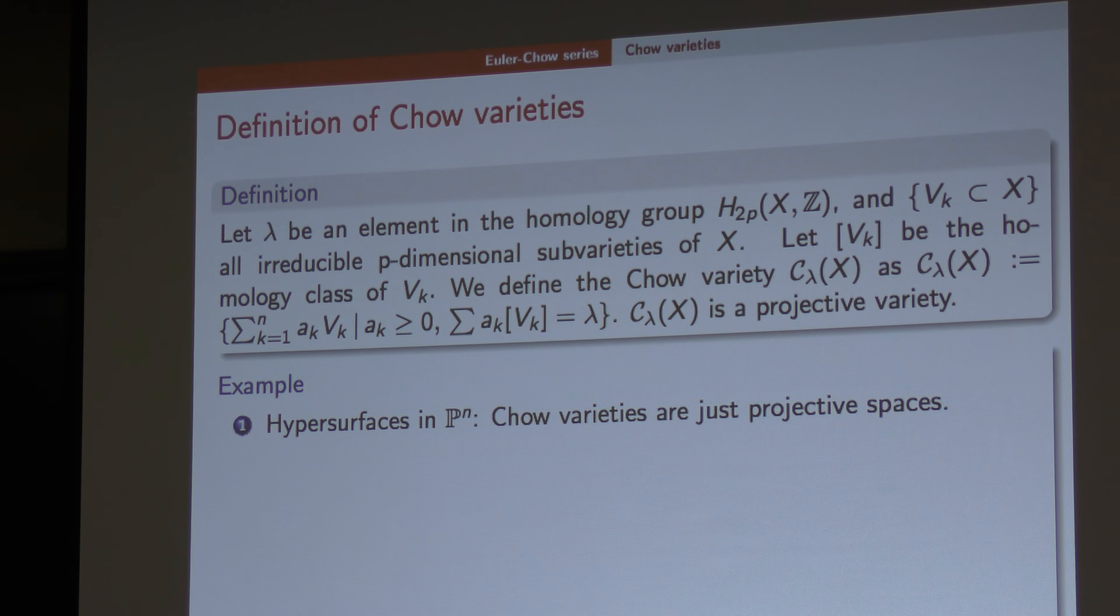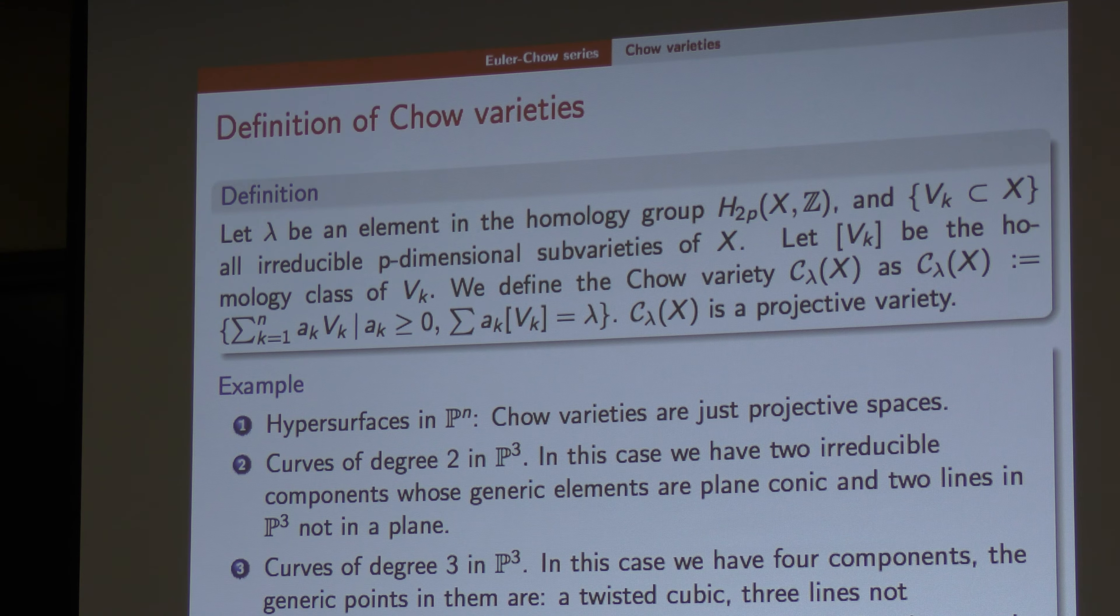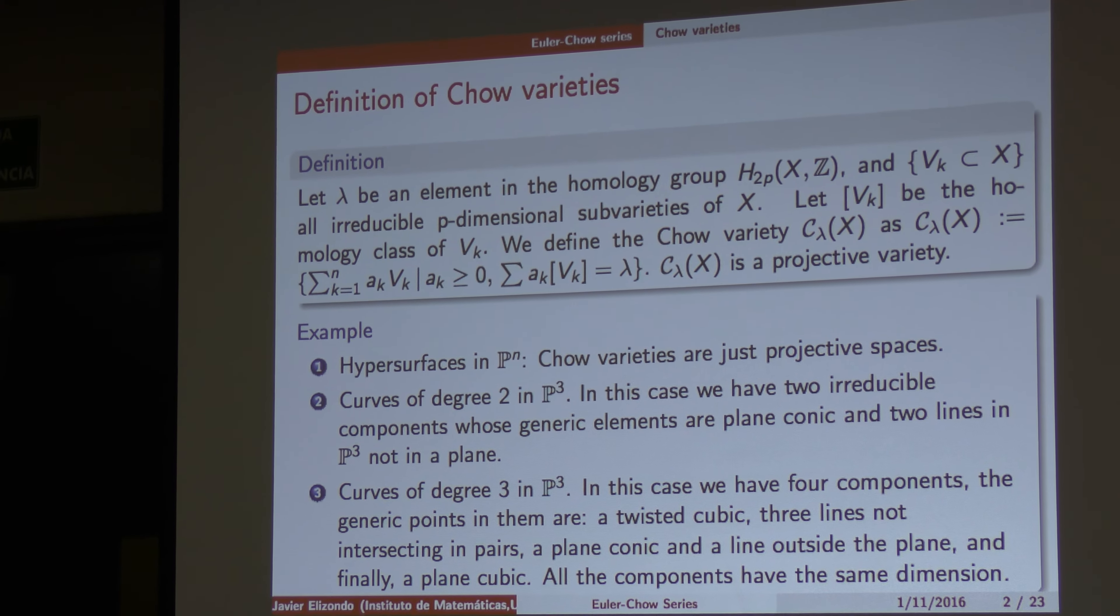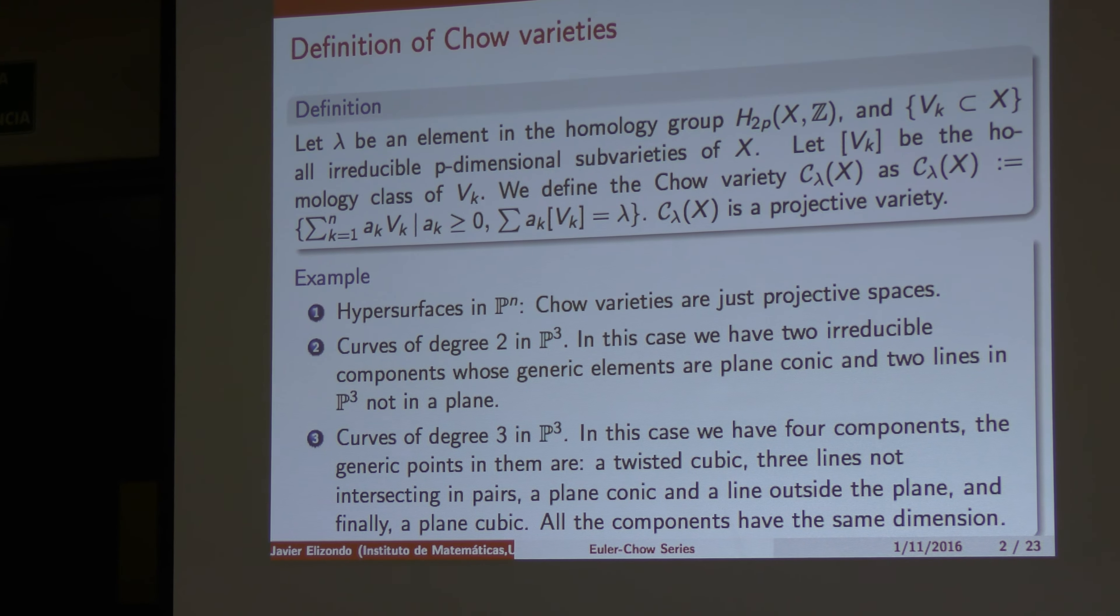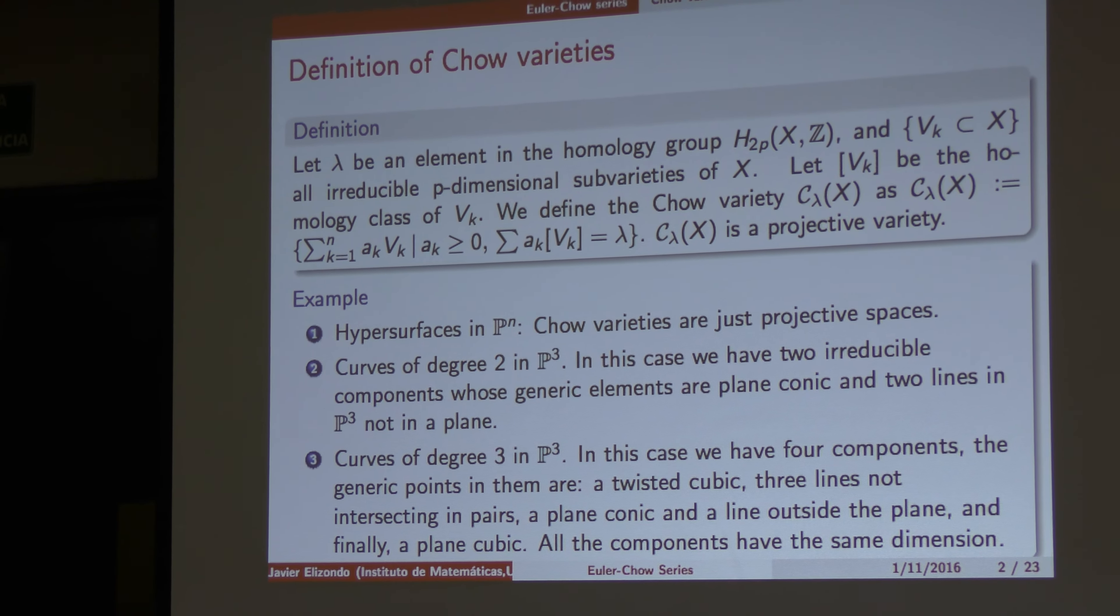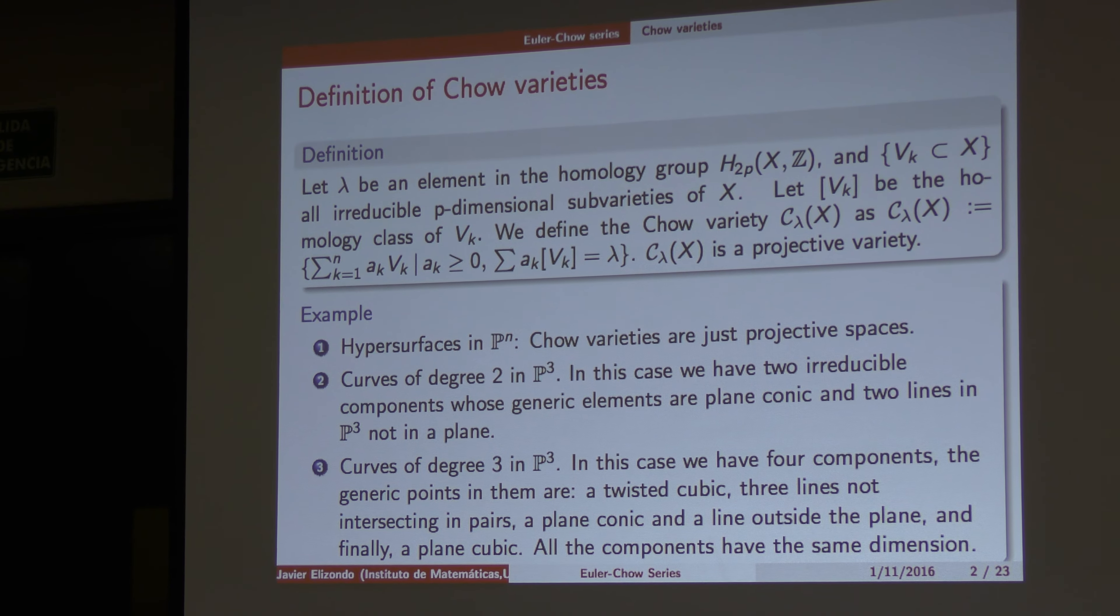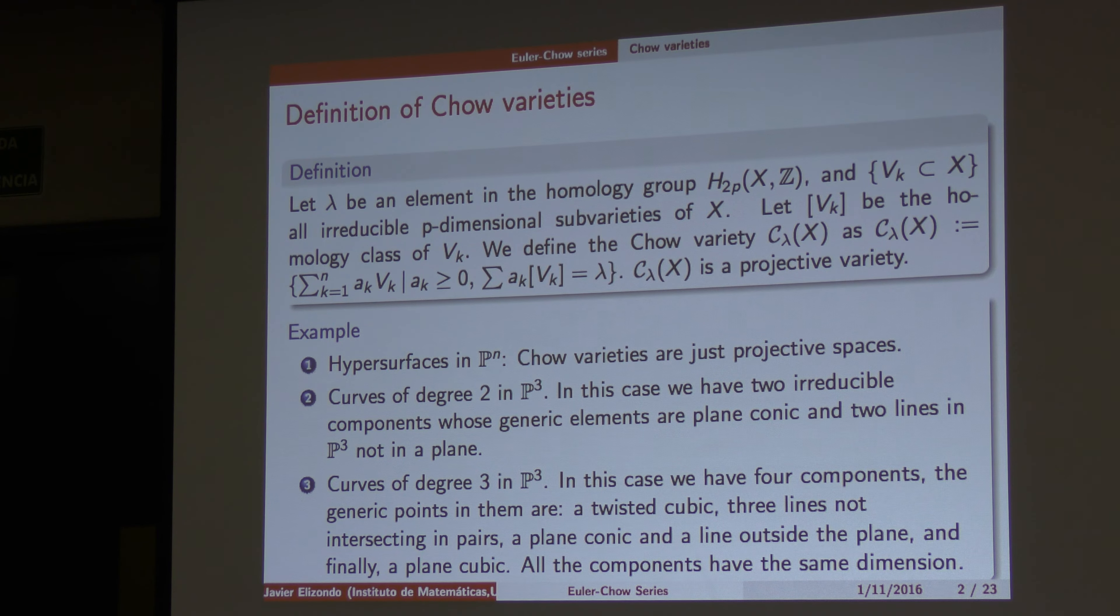And it's well known that this is a projective variety. And the first case is hypersurfaces in PN, which are the largest projective spaces. The second case is a quartic threefold in P3. So we have four components. There are the generic components in Chow variety. This one is the twisted cubic, a conic and line outside of the plane. And then you have three lines in general position, and then you have the twisted cubic.